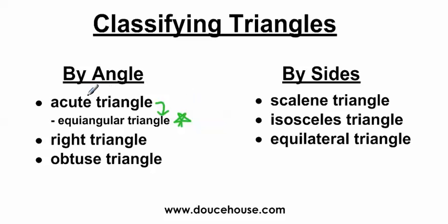Now, acute triangle is very similar to acute angle. Just like right triangle and right angle, an obtuse triangle and an obtuse angle — if you understand what an acute angle, a right angle, an obtuse angle is, that's going to help you quite a bit understand what I mean by these kinds of triangles.